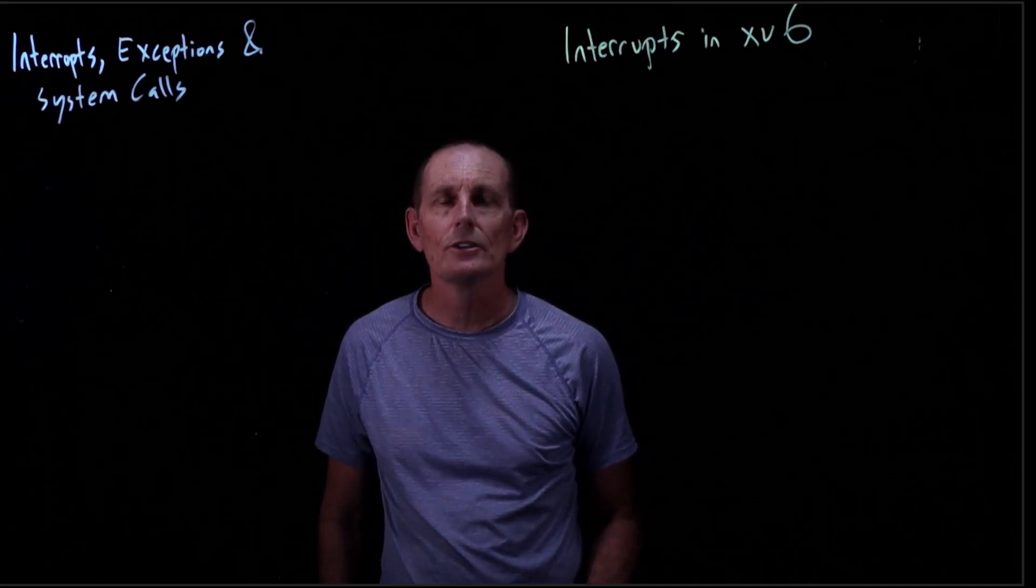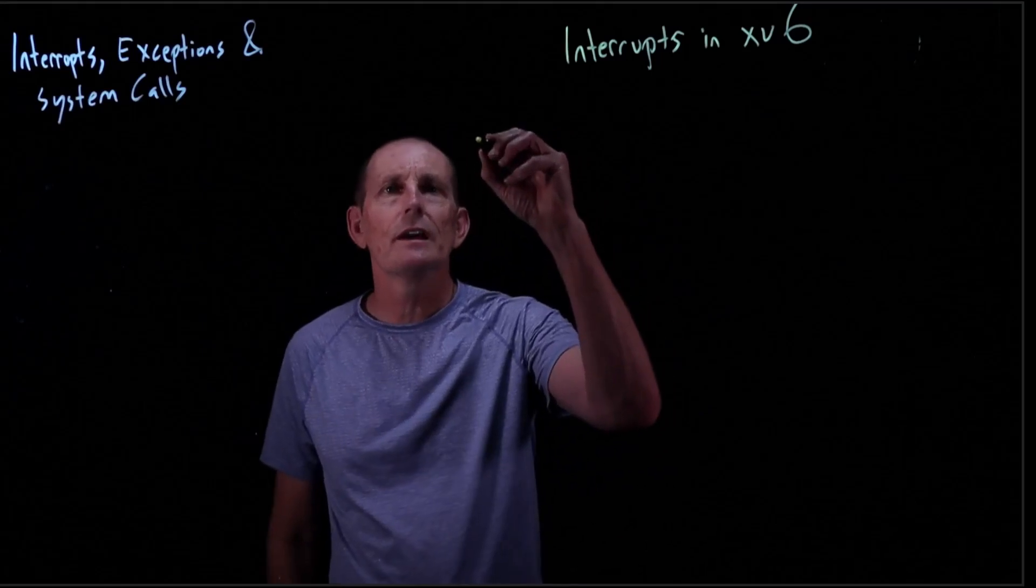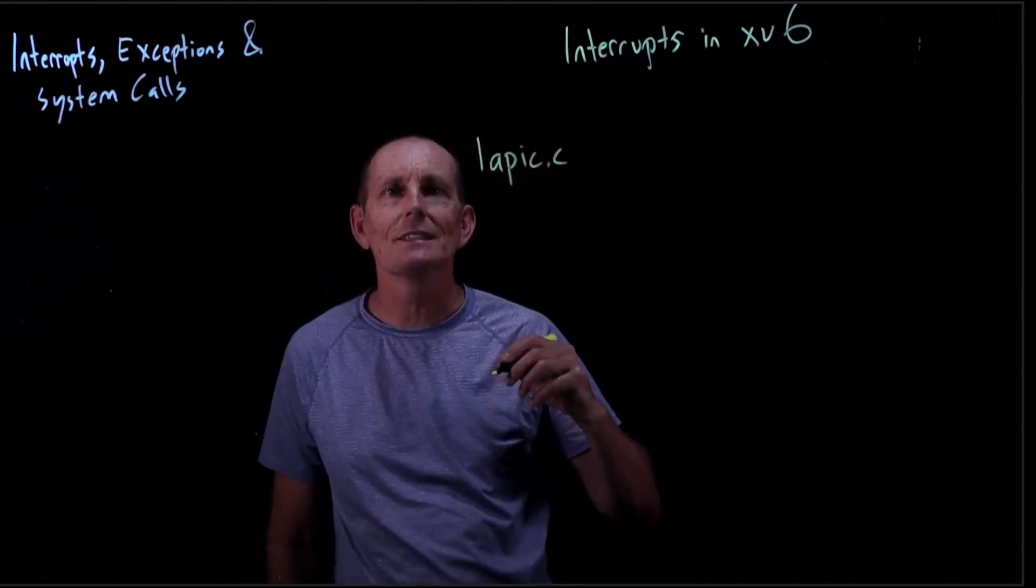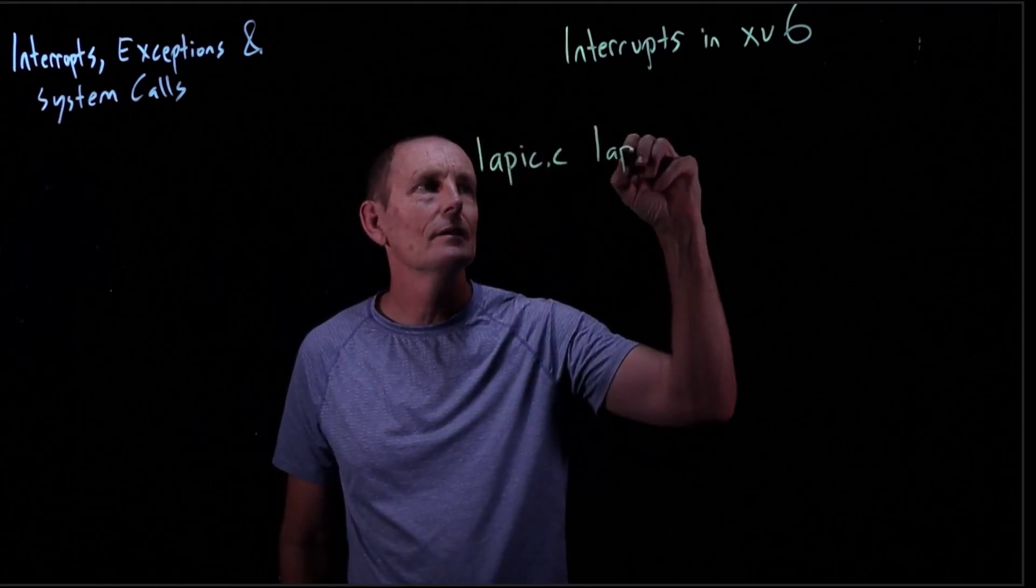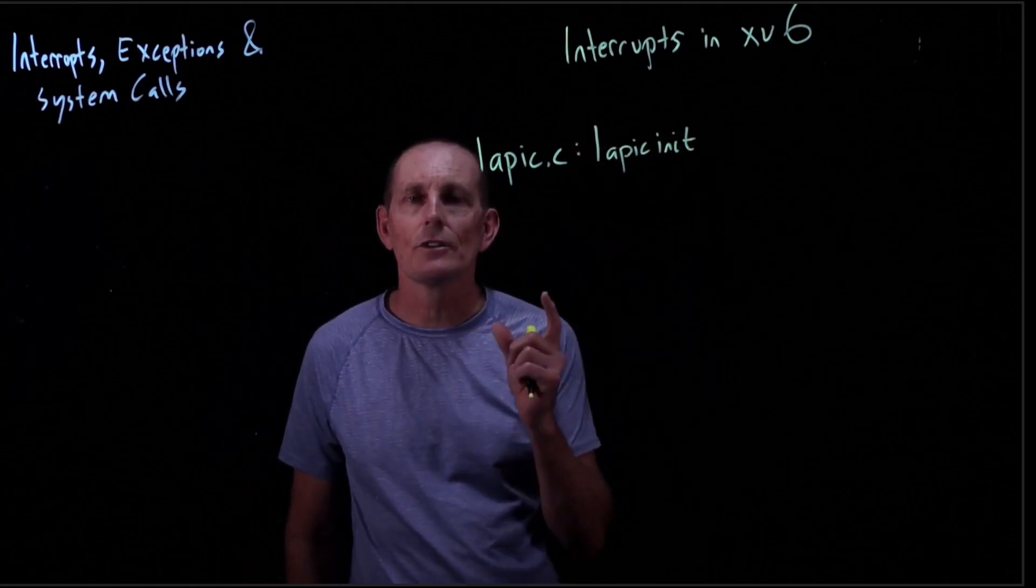So how does xv6 use interrupt? Well, first thing that happens is there's a lapic.c that has a lapic init. And what lapic init does is it tells the lapic hardware to use Vector32.